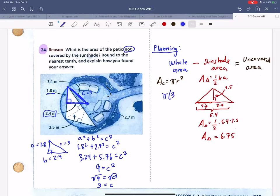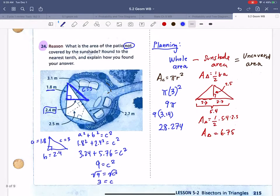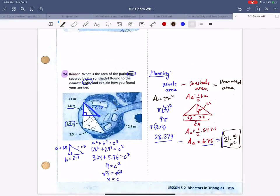I get 28.274. It says round to the nearest tenth. So I've got this decimal minus this decimal, and we're about to find our answer. So minus 6.75, we get 21.5 meters squared. Wow, what a cool question.